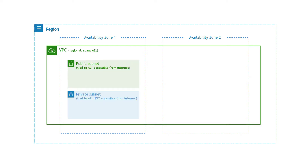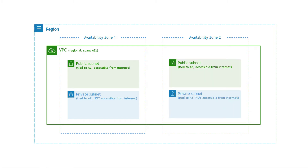Going down one more level, we have subnets — those different partitions of your VPC. These are tied to the availability zone, so you have subnets for the first AZ and more subnets for the second AZ. They're public and private subnets, as we talked about. The main distinction is that public subnets are accessible from the internet, and private subnets aren't.